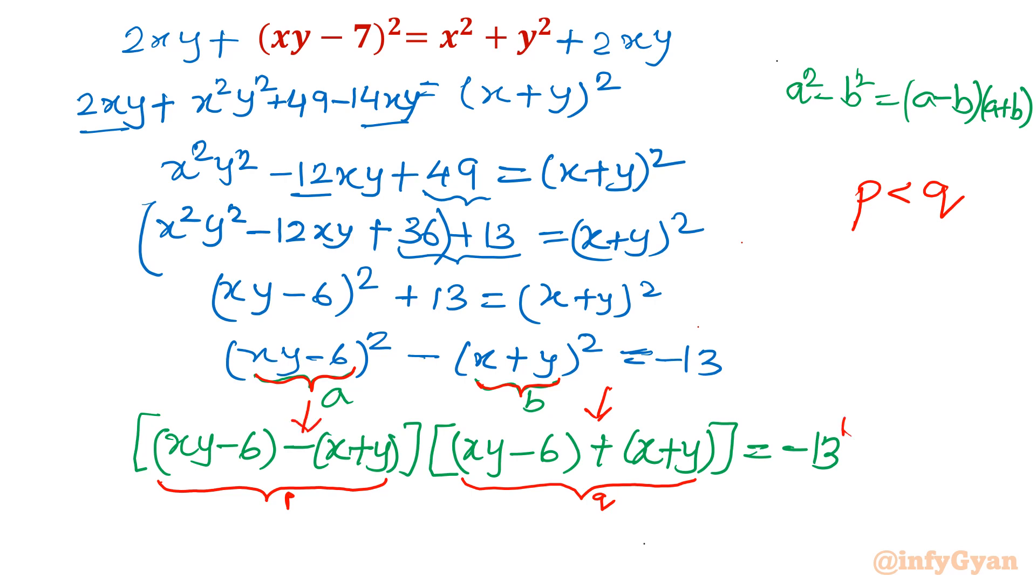Now prime factorization. As we know, 13 is a prime number. So we can write 1 times 13, or 13 times 1. The minus sign is there, so we will put minus sign only here. You cannot consider the otherwise case because q is always bigger than p. So I will have only two cases: negative 1 times 13, or negative 13 times 1.